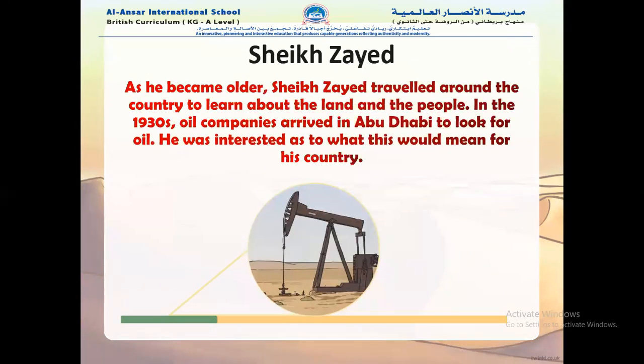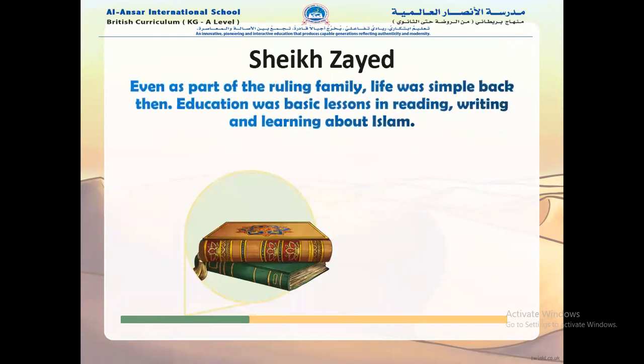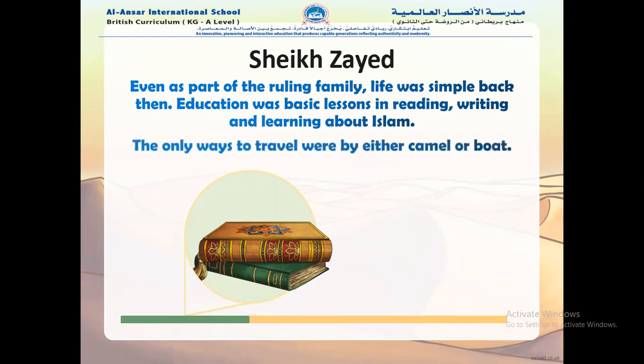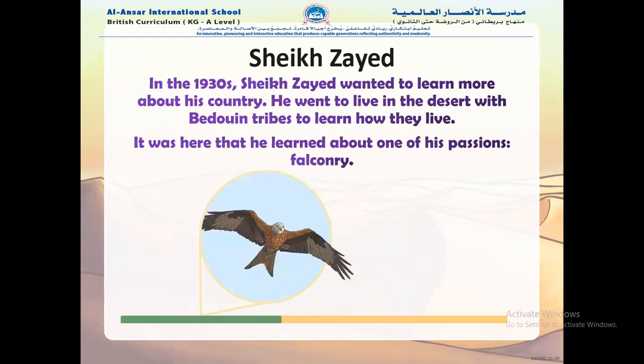As he became older, Sheikh Zayed traveled around the country to learn about the land and the people. In the 1930s, oil companies arrived in Abu Dhabi to look for oil, and he was interested in what this would mean for his country. Even as part of the ruling family, life was simple back then. Education was basic lessons in reading, writing, and learning about Islam. The only ways to travel were by camel or boat.